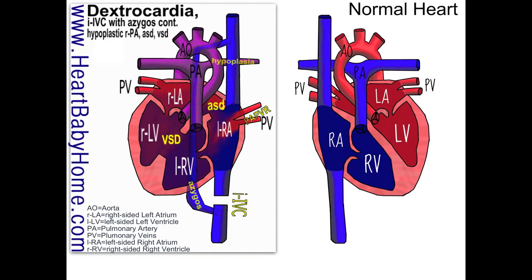Hey guys, it's Nanette with Heart Baby Home. Today we're looking at heart number 55: dextrocardia, interrupted IVC with azygos continuation, hypoplastic right pulmonary artery branch, ASD and VSD.